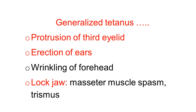There is erection of ears, again because of the contraction of the muscles. Wrinkling on the forehead is also observed, due to contraction of the muscles. Lock jaw — the mouth is tightly closed, difficult to open the jaw, tightly closed because of the trismus and spasms of the masseter muscles. But here, a little bit different from other animals: in other animals there is complete lock jaw, but in dogs the mouth is partially opened and the lips are retracted back.